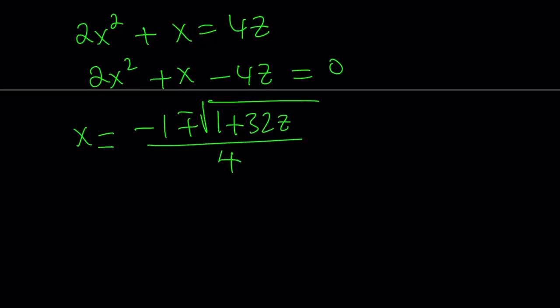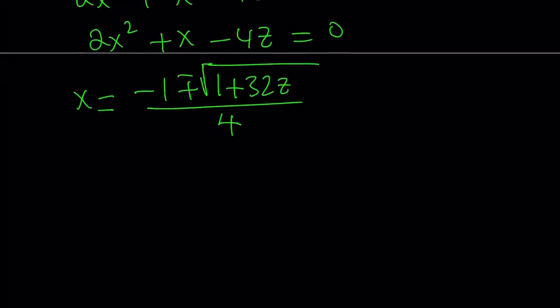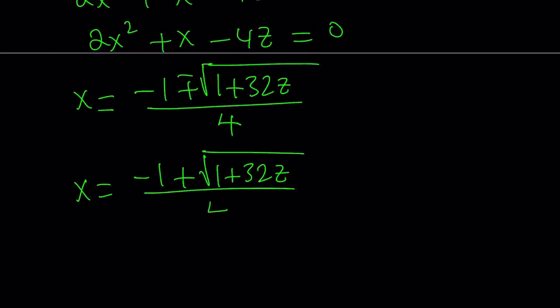There's a plus or minus, which means there are two solutions. Which one am I going to use? I'm going to use one of them — and I think if you use the other one, you'll get the same answer. You can test it out. So suppose x equals negative 1 plus the square root of 1 plus 32z, all over 4.